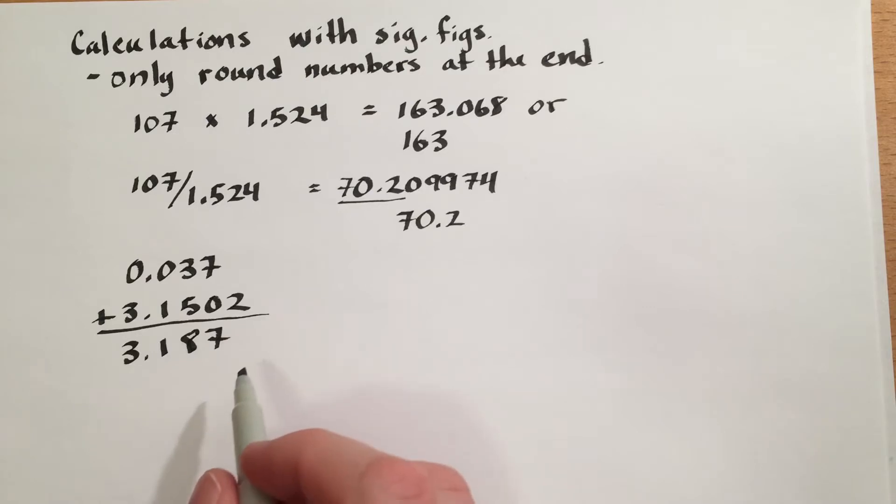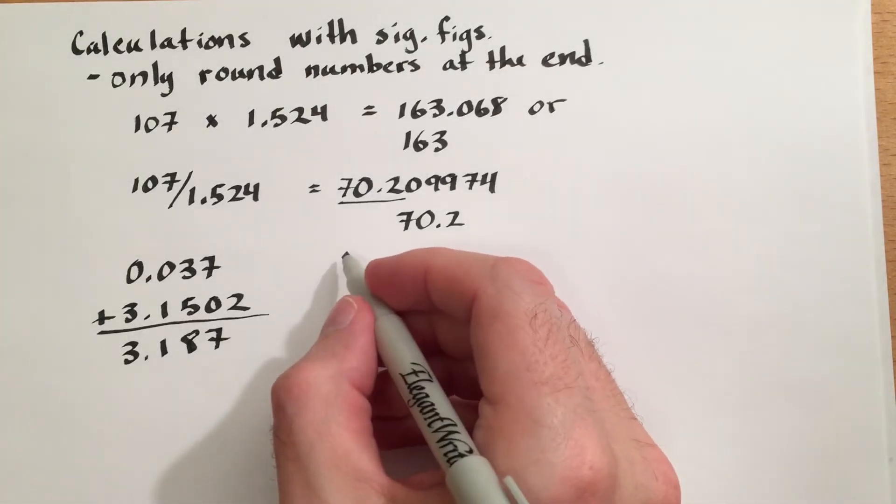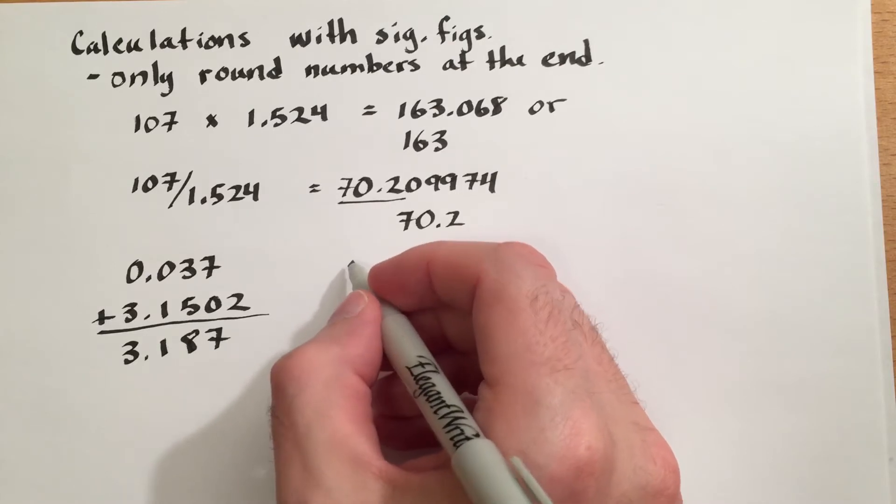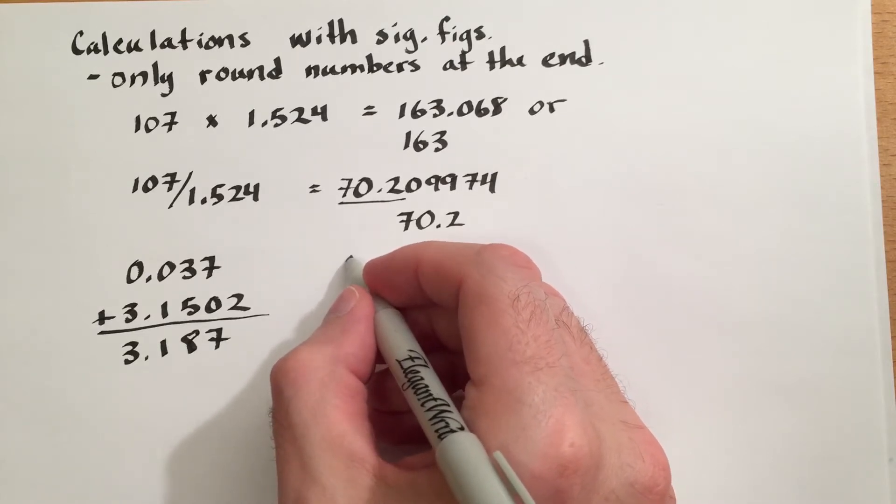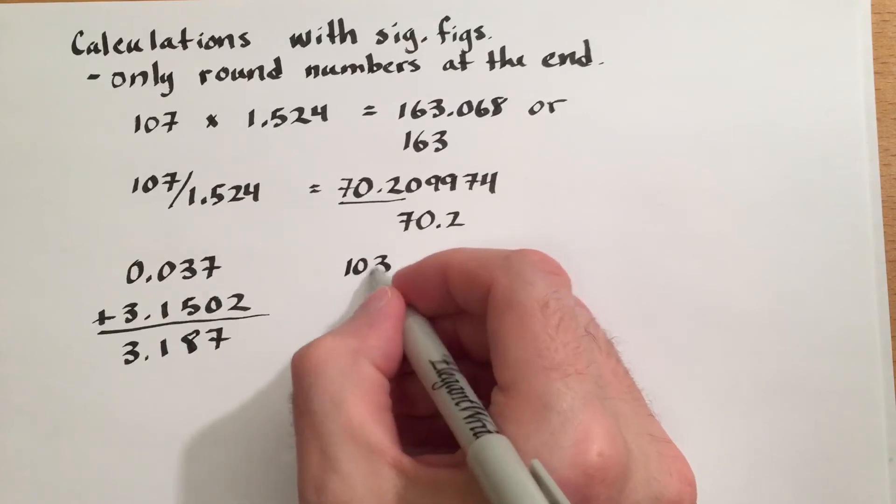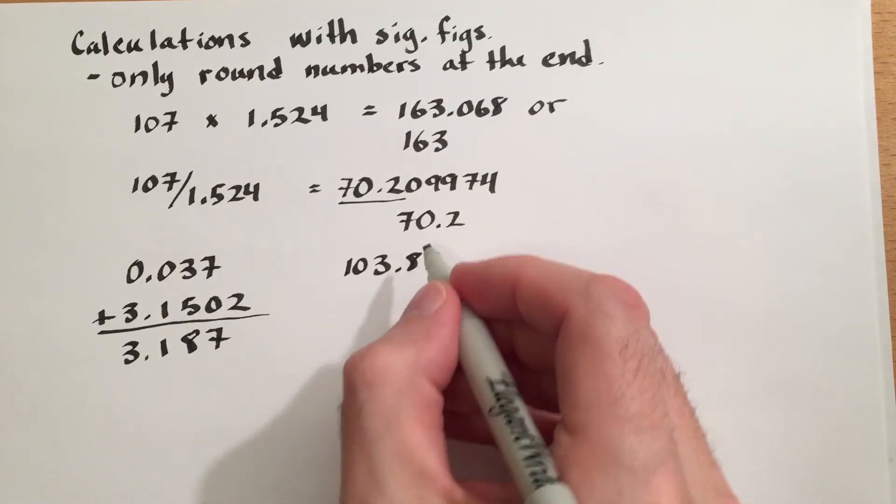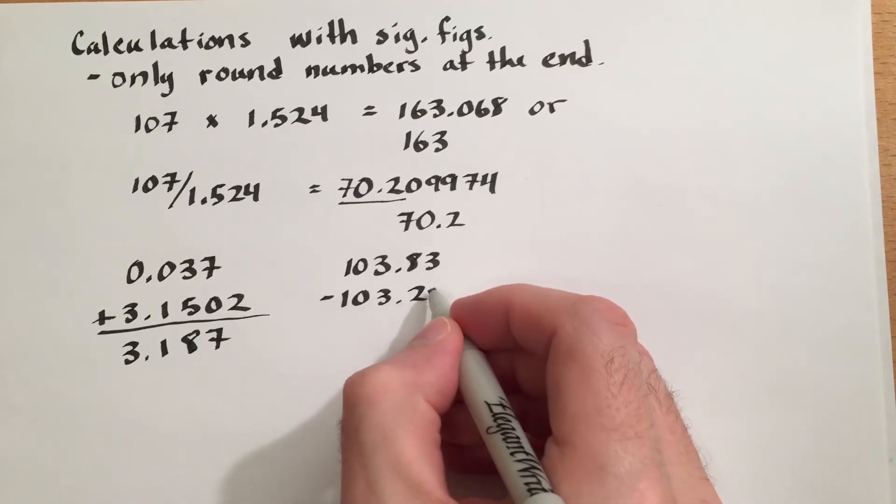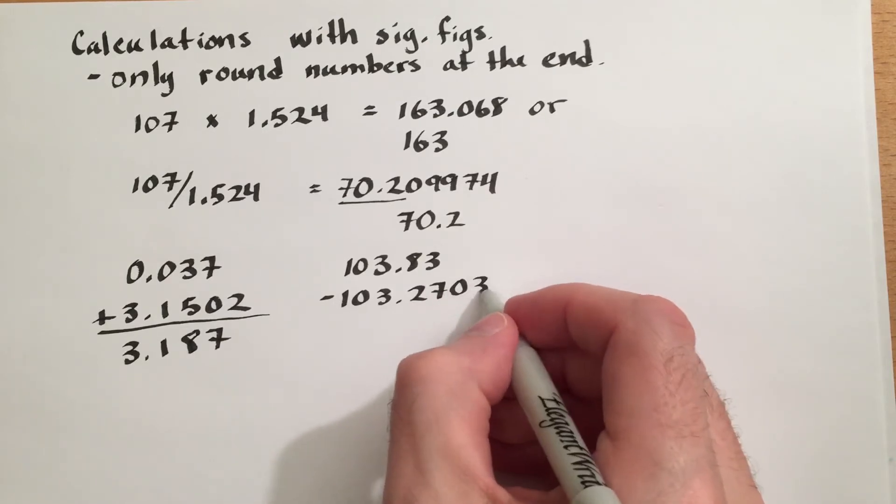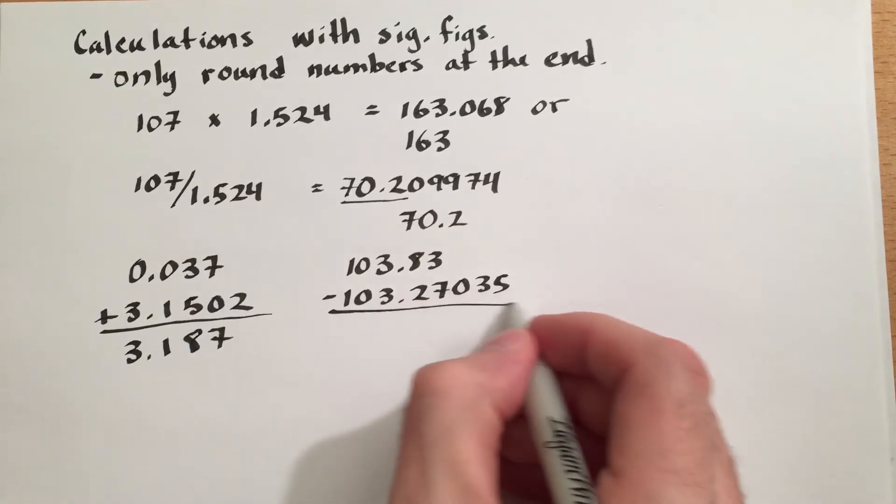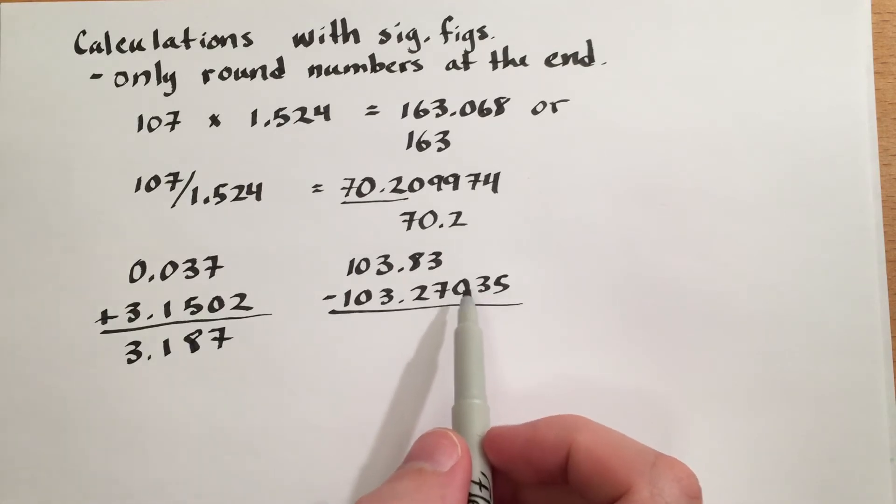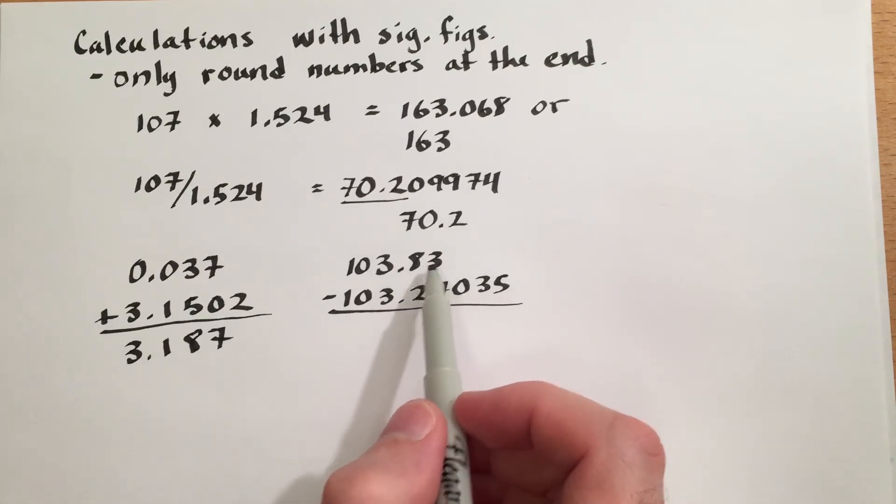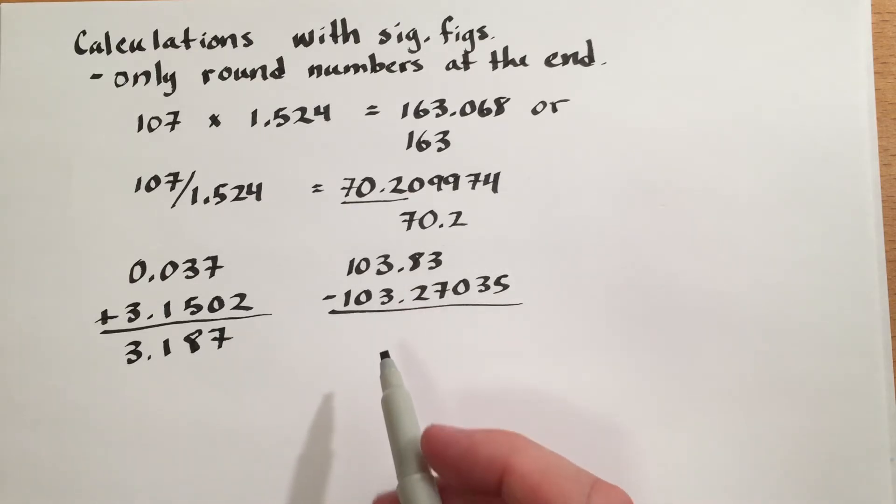The same rule applies in subtraction. We count only to the decimal places. So for example, if I take 103.83 and subtract 103.27035, the minimum number of decimal places here is 2 in the 103.83. And so when we report our answer, we should only report 2 decimals.